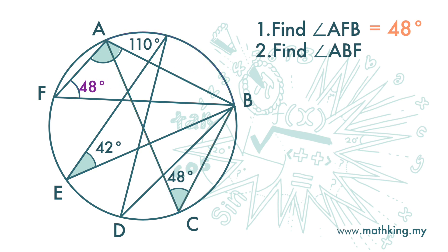Next, we want to find angle ABF. We need to look at this triangle. So here is 110 degrees, here is 48 degrees. So angle ABF is 180 minus 110 minus 48, and we get 22 degrees.